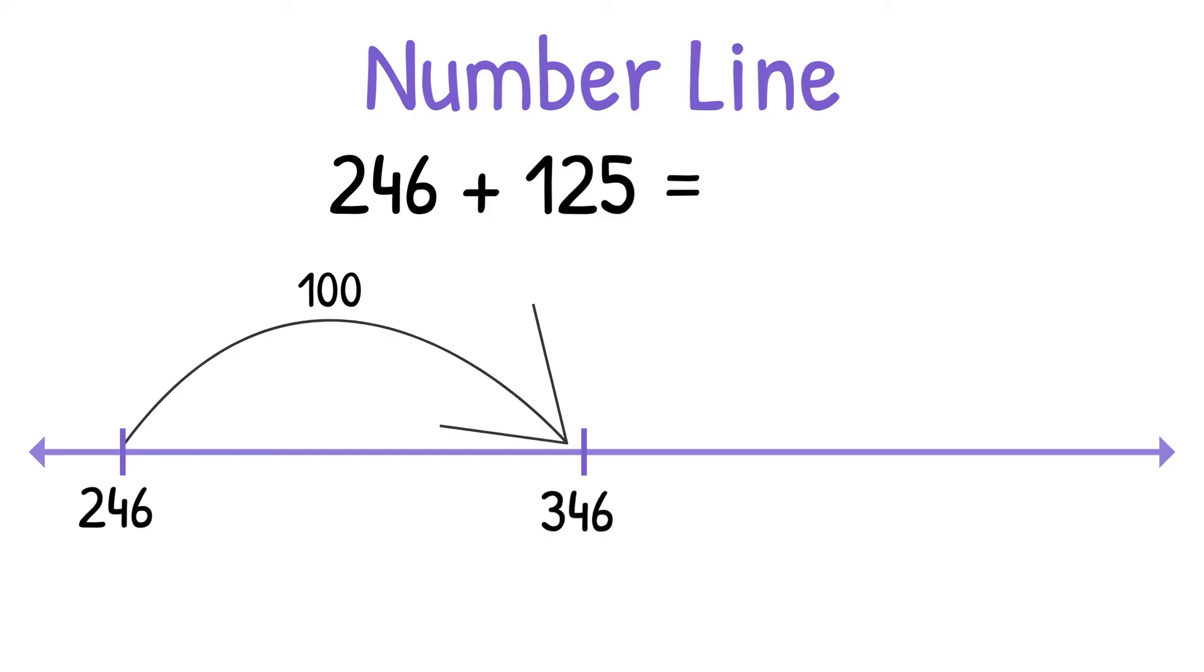Next, we're going to add the 20 from 125, so 346 plus 20 equals 366. Last, we will add the 5 ones. 366 plus 5 equals 371. So again, we get our answer 371.